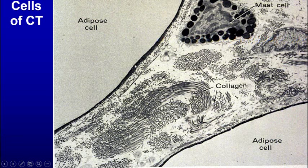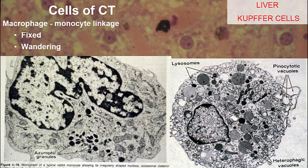Here we have white fat with cytoplasm associated with it, mast cells, collagen bundles. These are cells in the connective tissue.